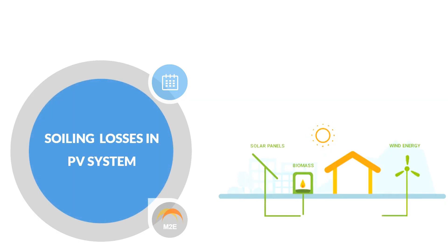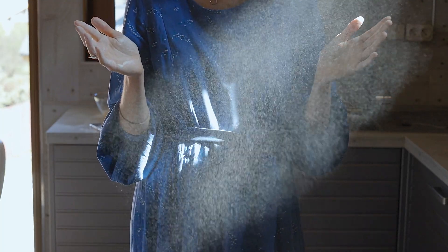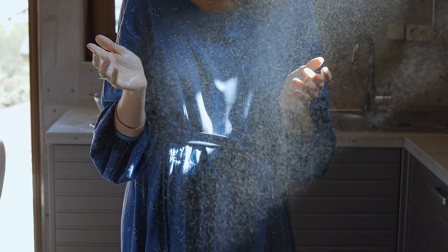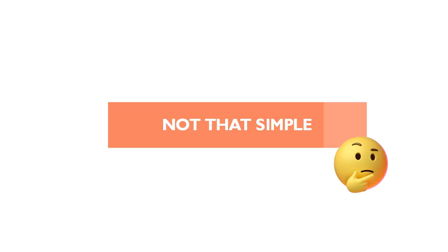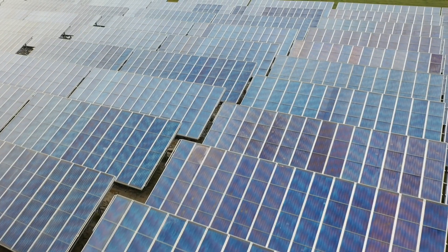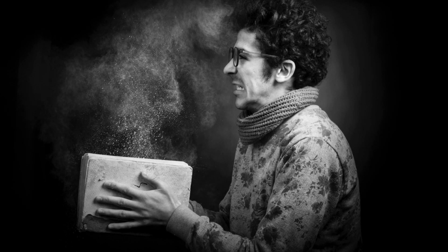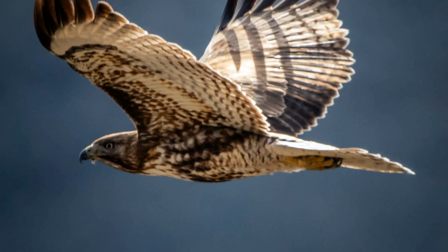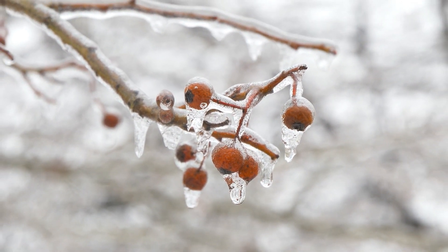Hi friends, this is Jenny, and today we will learn about soiling losses in PV systems. Soiling loss is the dust deposition on solar panels' surface, but it's not just dust. Apart from dust, bird droppings and snowfall are also a part of soiling loss — yes, snow is a part of soiling loss, which we will come to later.